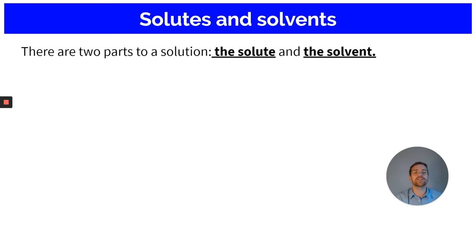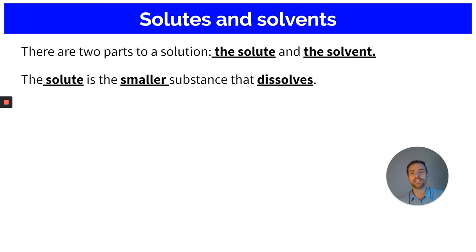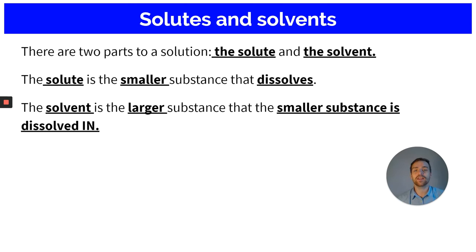There are two parts in every solution: the solute and the solvent. The solute is the smallest substance that dissolves, and the solvent is the largest substance that the smallest substance is dissolved in. That may sound confusing, so let's work with an example.